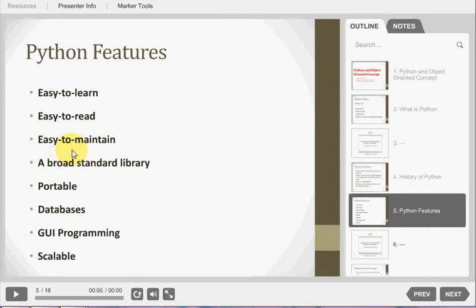Easy to maintain. It means Python source code is fairly easy to maintain. Python has a broad standard library. Python has a bulk of library which is very portable and supports cross-platform such as Unix, Windows and any other.